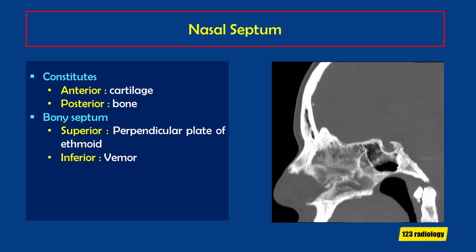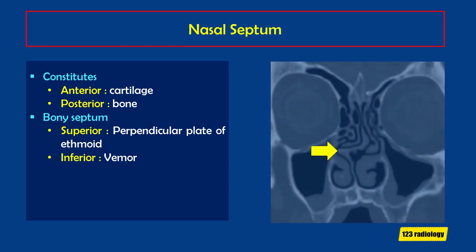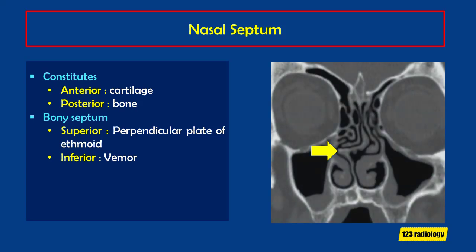The nasal septum has bony and cartilaginous components. Superiorly, the perpendicular plate of ethmoid bone forms the superior septum. Posteriorly we have the vomer bone, and anteriorly the septal cartilage. On coronal imaging, you can see the perpendicular plate of ethmoid intersects with the vomer, forming the nasal septum.